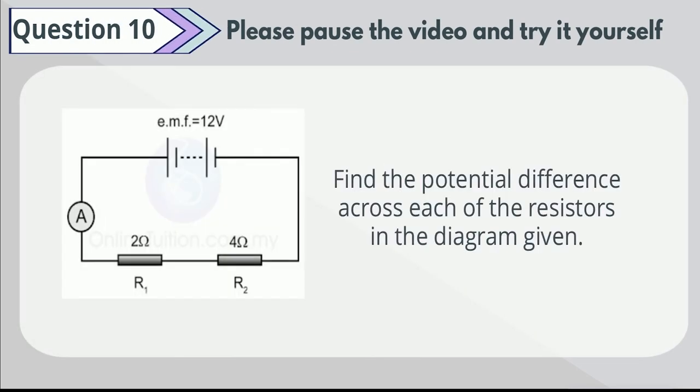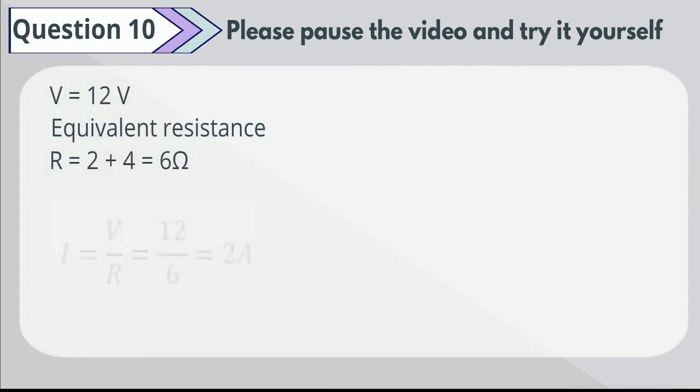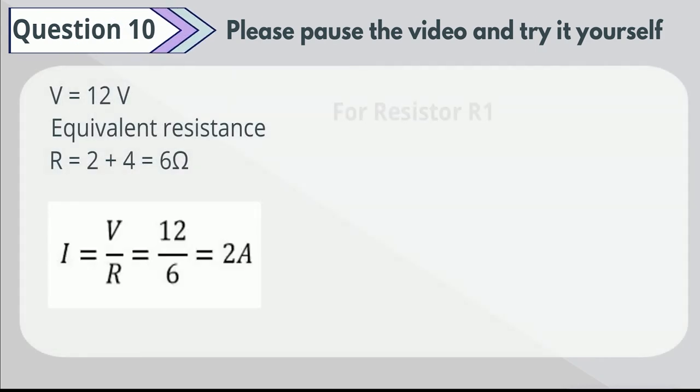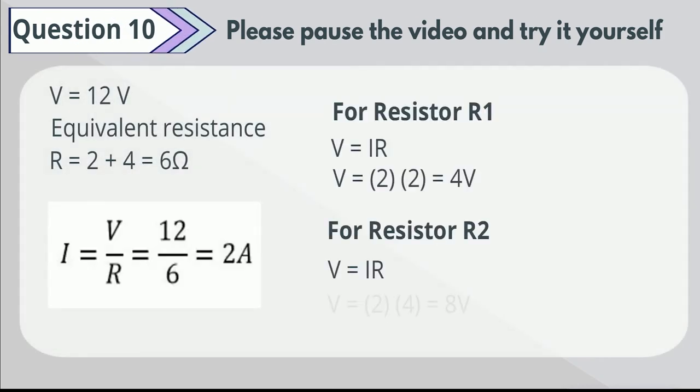Question 10. Find the potential difference across each of the resistors in the diagram given. Please pause the video to try it yourself. From the calculations, the potential difference of resistor 1 is equal to 4 volts, and the potential difference of resistor 2 is equal to 8 volts.